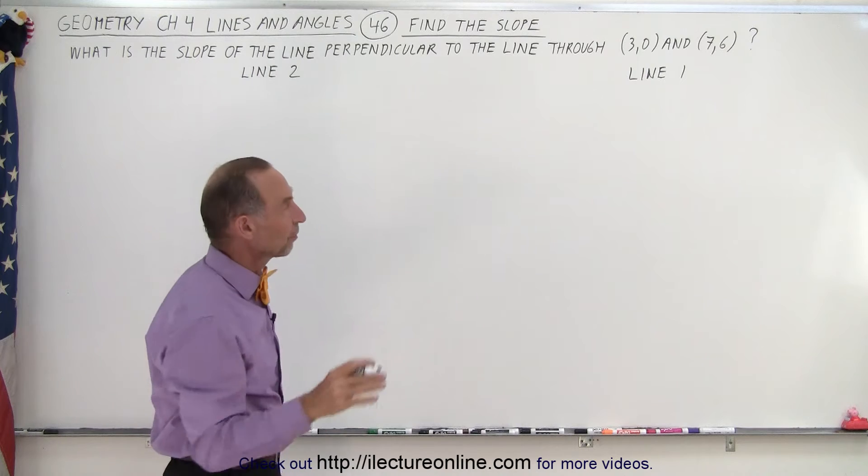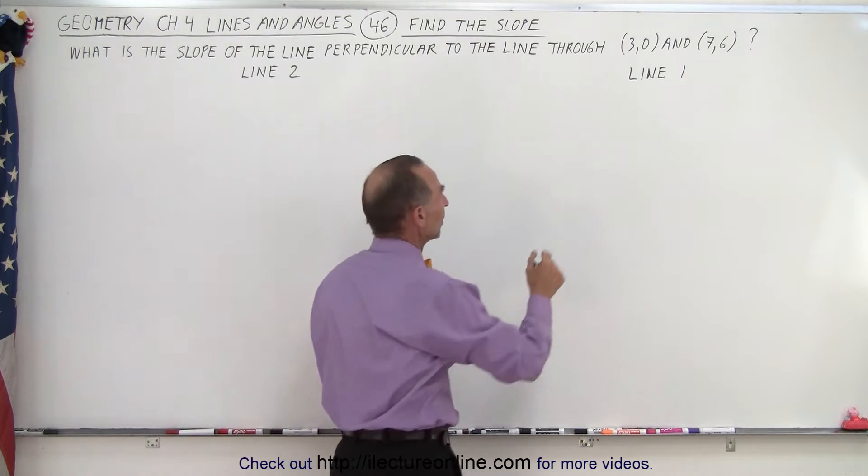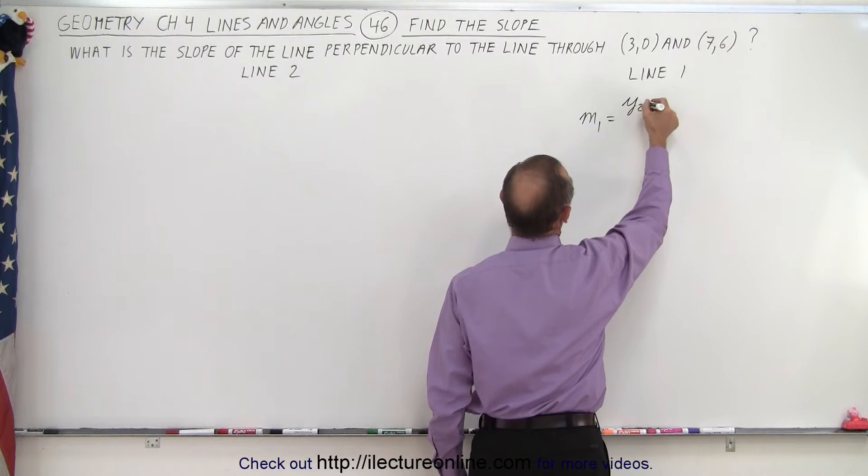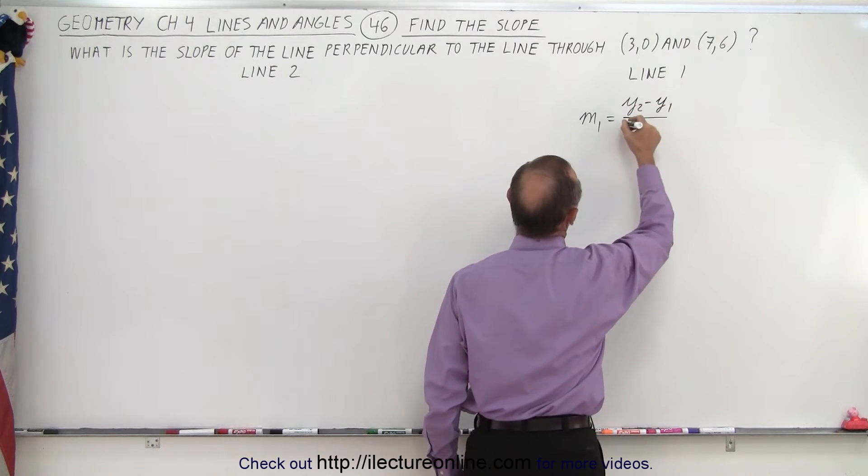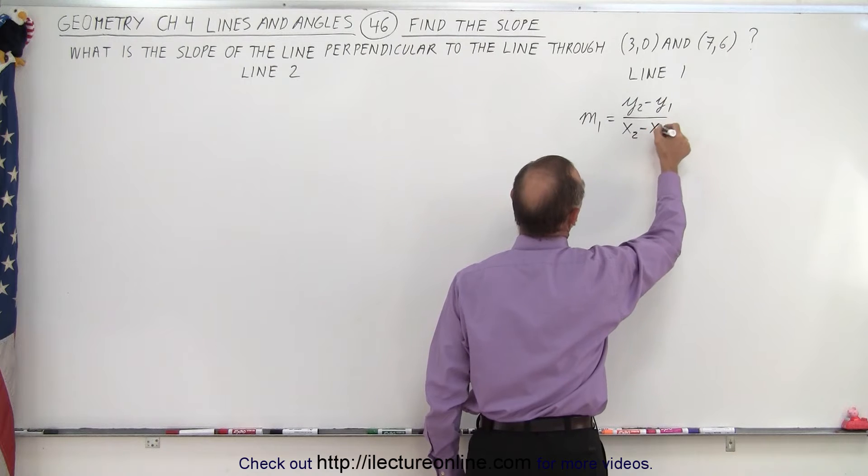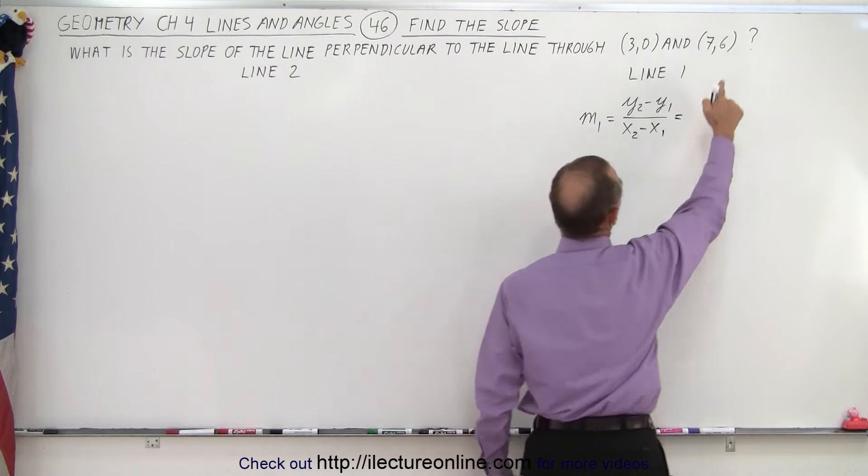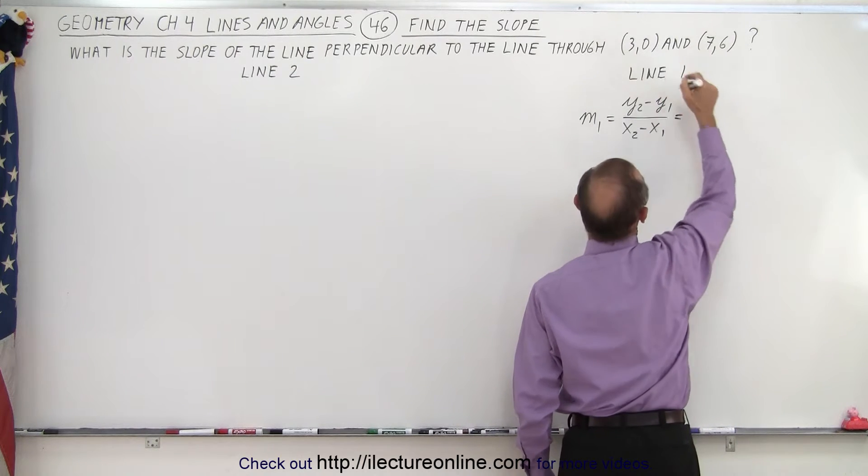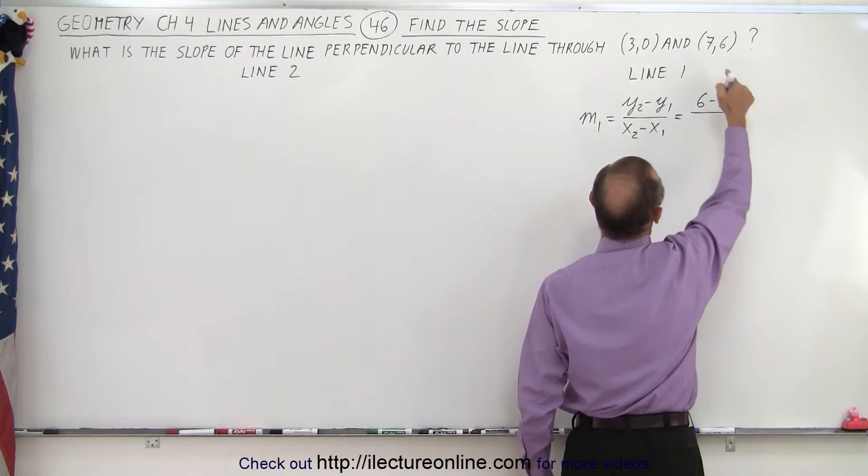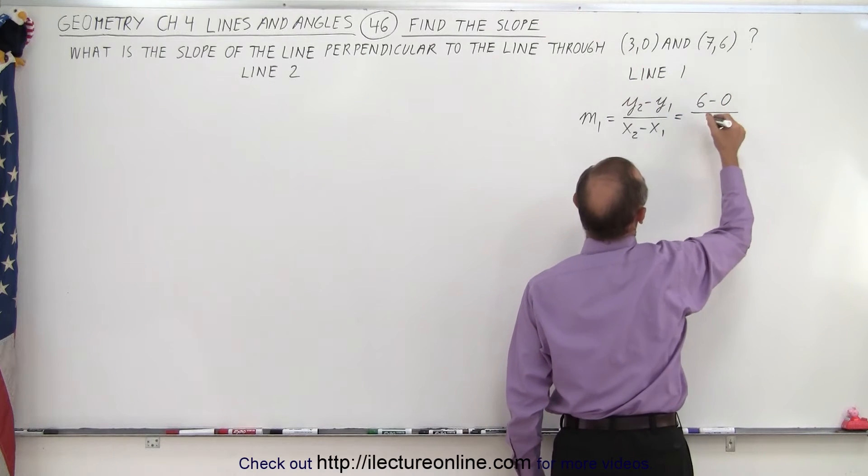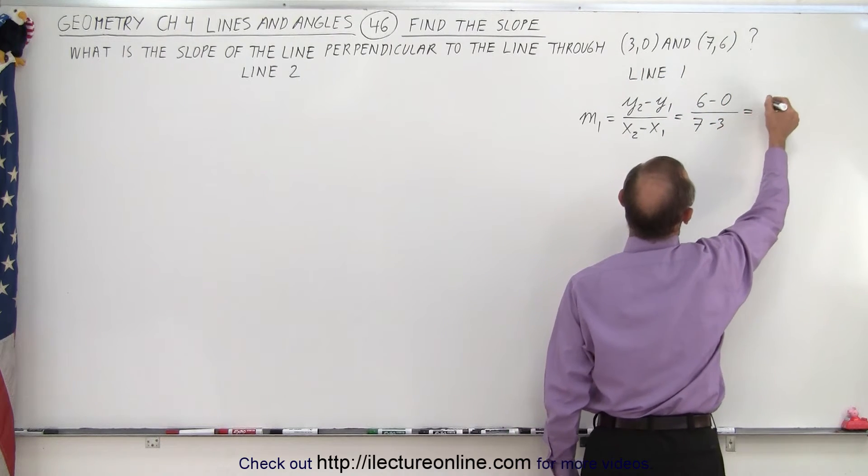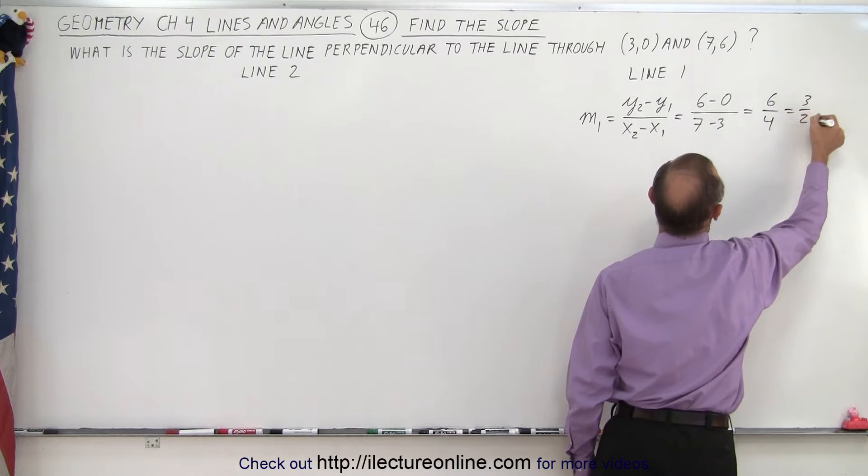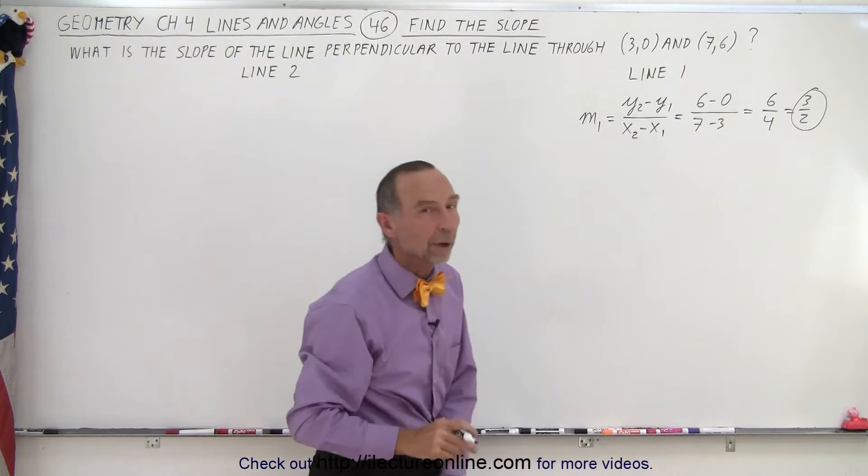So first we need to find the slope of line 1. And so we can say that m1 by definition is equal to the change in the y values divided by the change in the x values or the x coordinates of those two points. So if we call this point 2 and this point 1, then this is y2 and this is y1 and so we write 6 minus 0. And this is x2 and this is x1 so we write 7 minus 3. And so we end up with 6 over 4 which is equal to 3 over 2. So that's the slope of line 1.